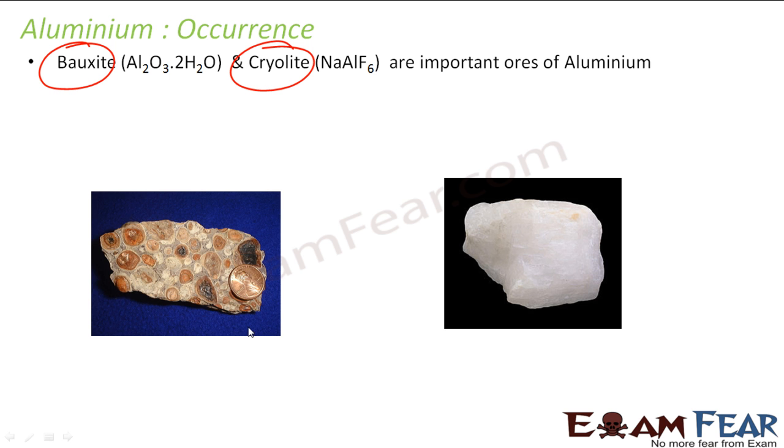Bauxite and cryolite are the important ores of Aluminium. This is how bauxite looks and this is how cryolite looks.